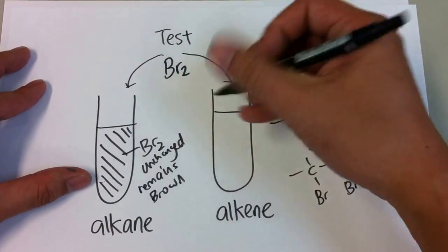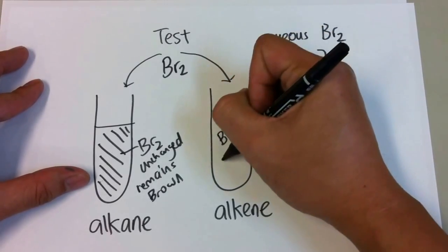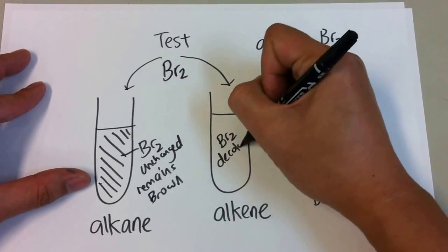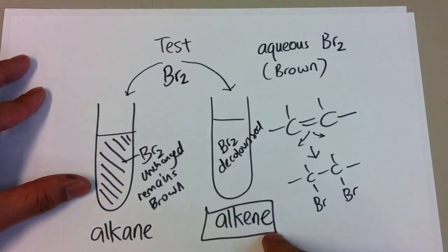The brown solution will straight away decolorize. So, Br2 decolorizes in the presence of an alkene.